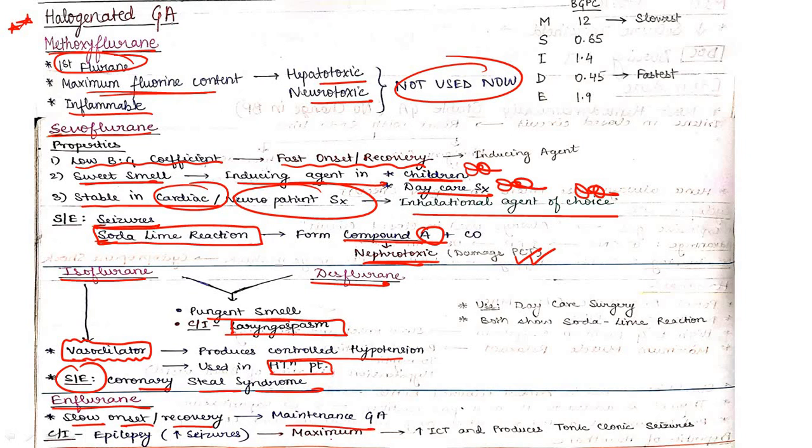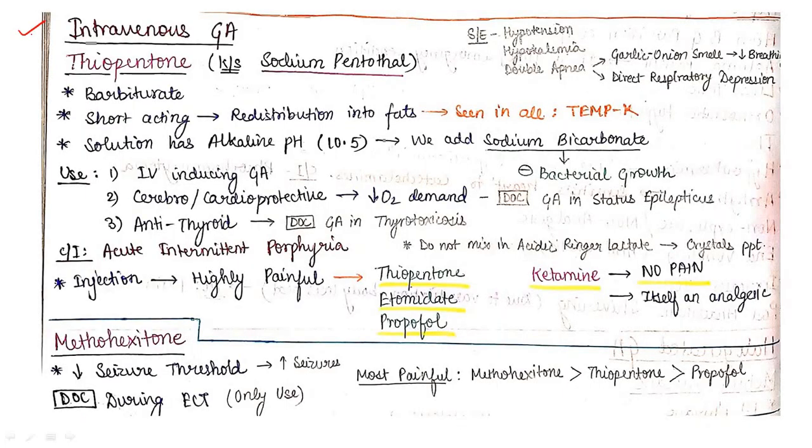Enflurane has slow onset and recovery so can be used as maintenance GA. Contraindication is epilepsy and seizures.